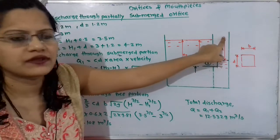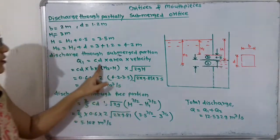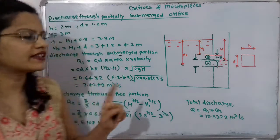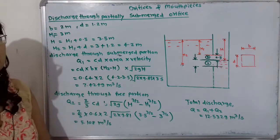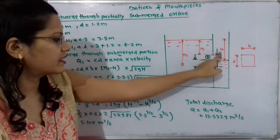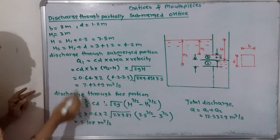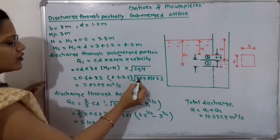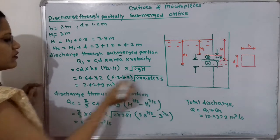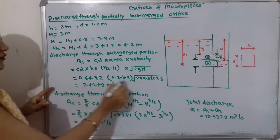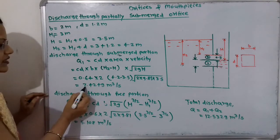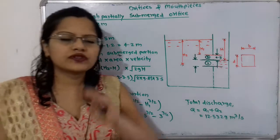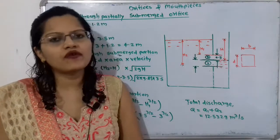Substituting values: Velocity = √(2 × 9.81 × 3.5). Area uses h2 = 4.2 and h = 3.5, so (h2 − h) = 0.7 m. Calculating Q1 gives 7.4249 m³/s. This completes the first part.